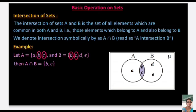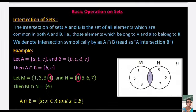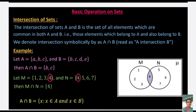Another intersection example: M = {1, 2, 3, 4} and N = {4, 5, 6, 7}. The only common element is 4, so M ∩ N = {4}. In the Venn diagram, the shaded overlapping part represents M ∩ N. The set builder form: A ∩ B = {x : x ∈ A and x ∈ B}.